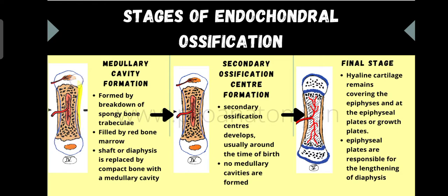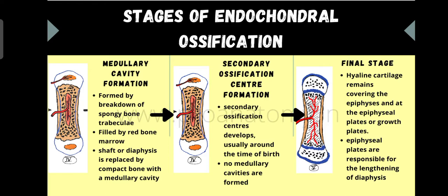Then we have medullary cavity formation. Considering the mid-region — the diaphysis — the calcification process is happening and the whole region becomes spongy bone trabeculae. Spongy bone and compact bone are the two types of bone. The diaphysis is replaced by spongy bone, and the spongy bone itself breaks down in the mid-region, forming a cavity called the medullary cavity, which is filled by red bone marrow. The spongy bone in the diaphysis then gradually gets replaced by compact bone, while the medullary cavity remains in the center.